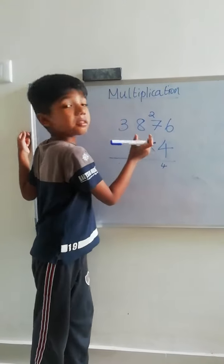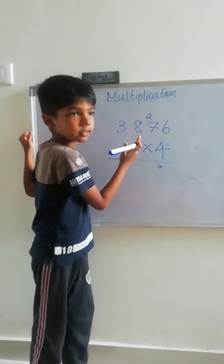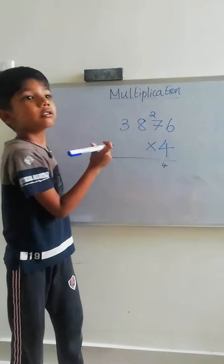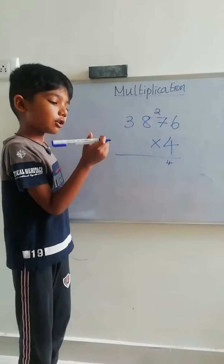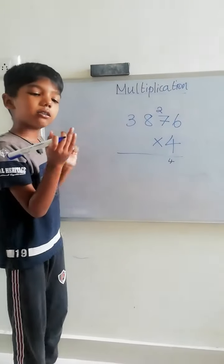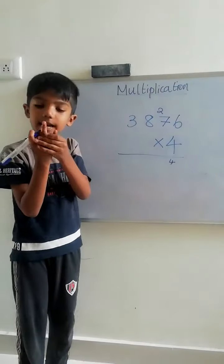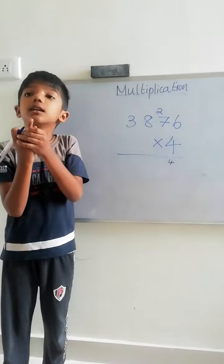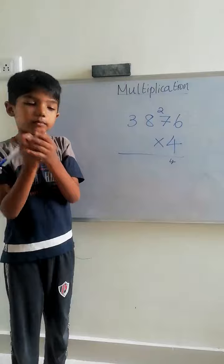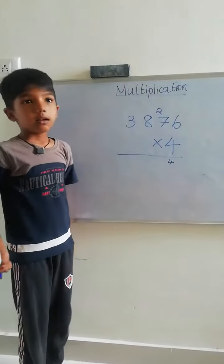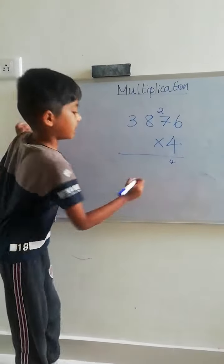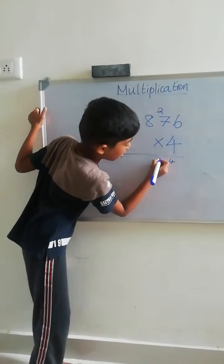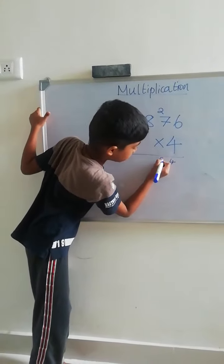4, 7 are 28. We want to add in 28, 2. 29, 30. Here we want to put 0. Here we want to put 3.